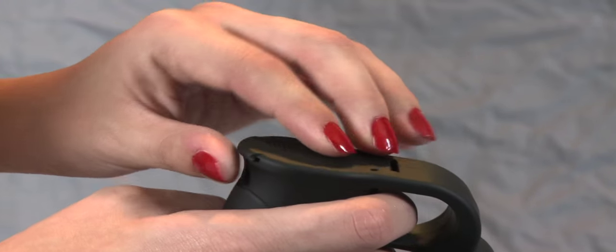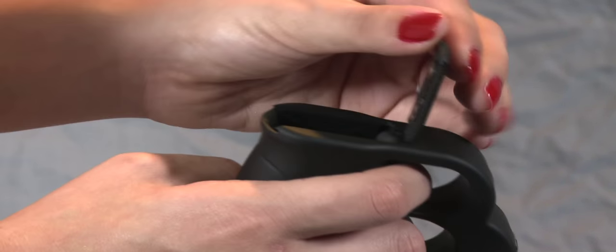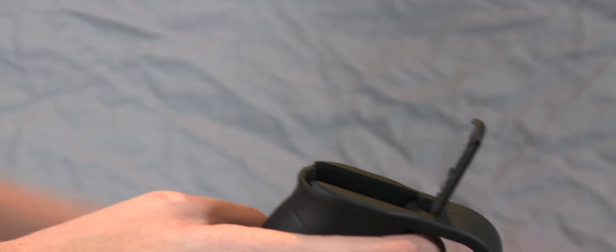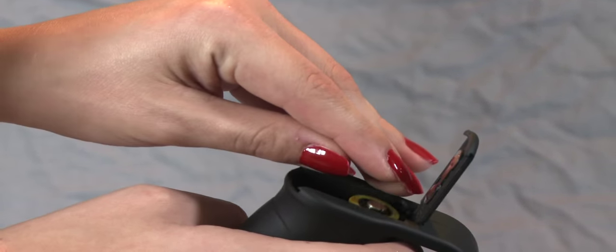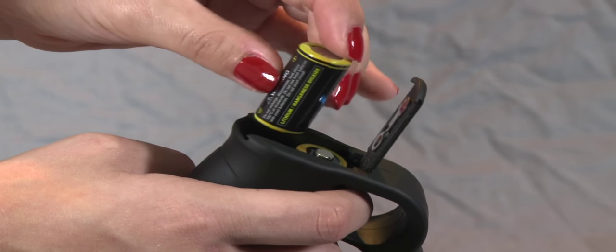Open the battery cover on the bottom of the knuckles. Remove the cellophane from the included batteries and insert batteries into the knuckles as shown, and then simply close the cover.